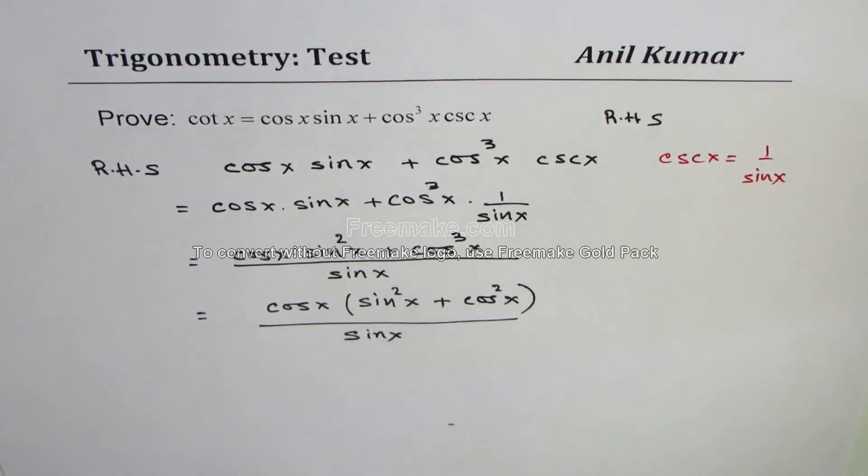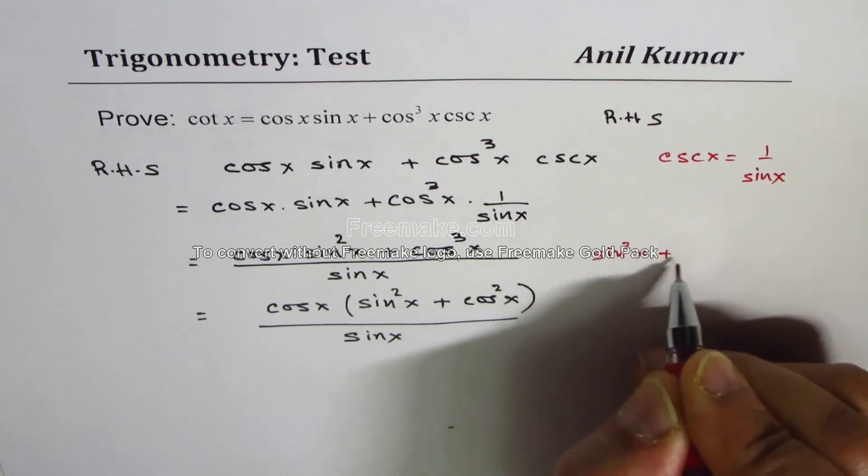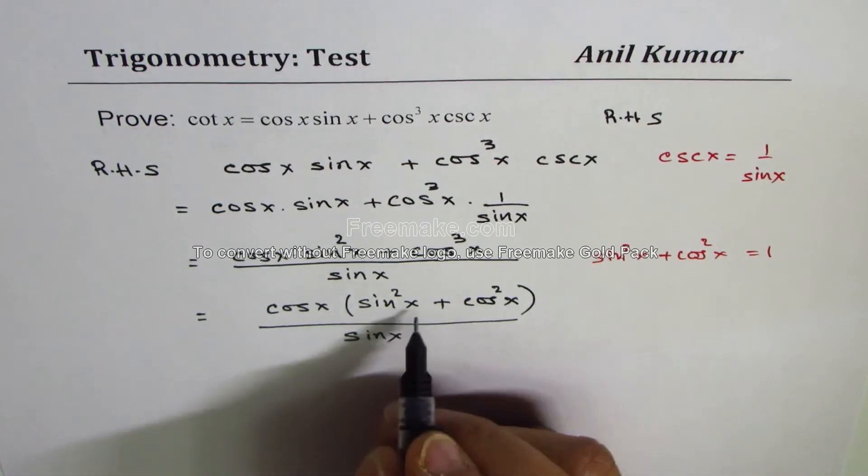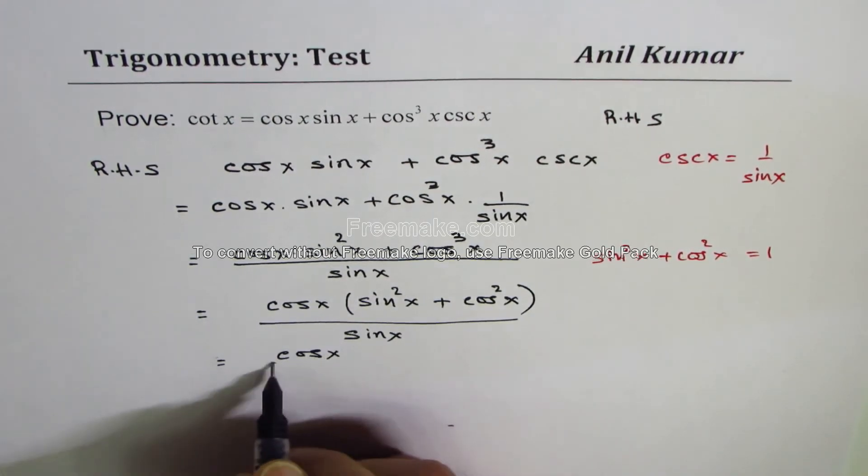Now, sin² x plus cos² x equals 1—that's the Pythagorean identity. Since this is 1, we are left with cos x over sin x.